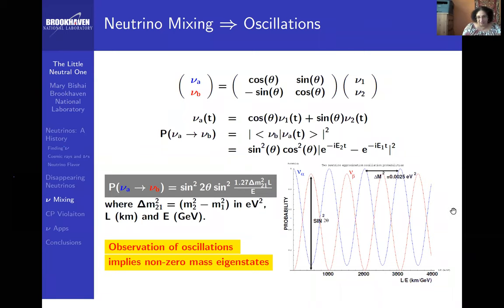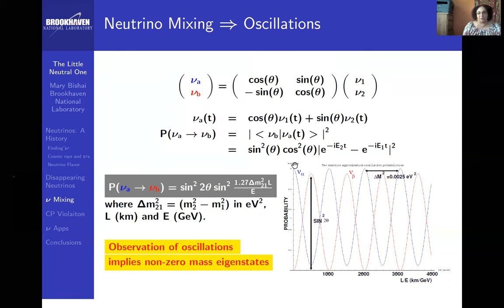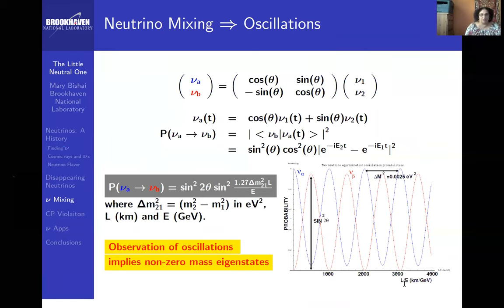If you see neutrinos disappearing, it could be decay or oscillations — those were the two possibilities. To distinguish them: if it's an oscillation, you'd see sine-squared behavior; if it's decay, you'd see exponential decay. So you'd have to study the appearance and disappearance of neutrinos over different ranges to determine which it is — decay or oscillation as proposed by Bruno Pontecorvo.